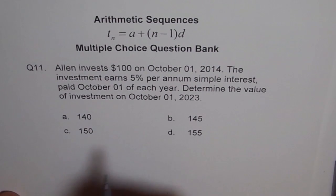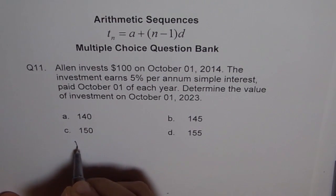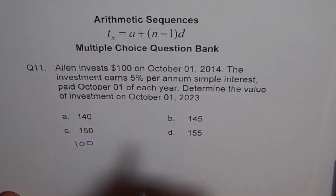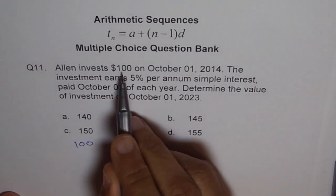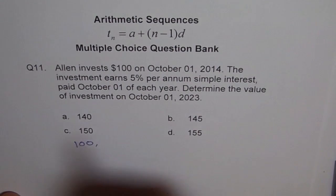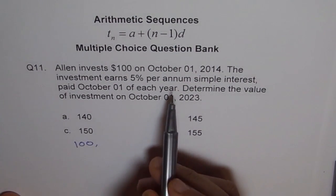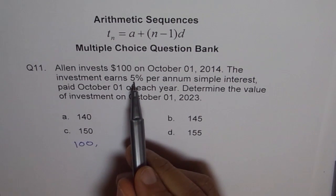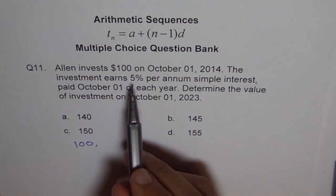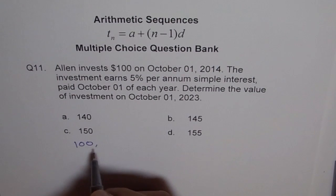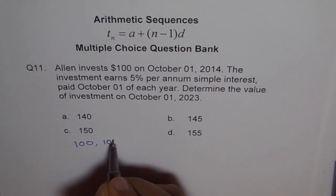So we can make a sequence like this. The first year is investment. In 2014, $100. Next year, in 2015, October 1, simple interest of 5% will be given. So the amount will increase by 5. So it becomes $105.